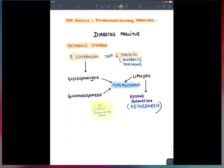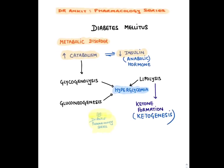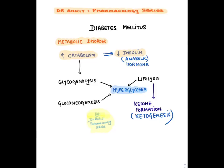Diabetes is a metabolic disorder, meaning there is an imbalance between catabolism and anabolism in the body. Catabolic activity increases because there is a defect in insulin, which is an anabolic hormone. So all stores of the body catabolize: glycogen breaks down — glycogenolysis — leading to hyperglycemia. Proteins and amino acids also contribute to hyperglycemia through gluconeogenesis, and fats break down leading to lipolysis and ketone formation.